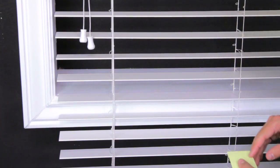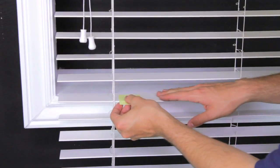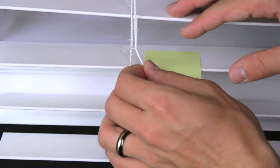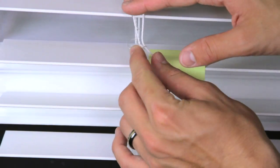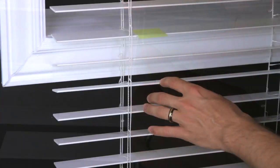Before shortening the blind, mark the slat at or just below where the blind will stop. This will be the last slat. Before you remove the excess slats and strings, note which are the ladder strings and which are the lift strings.